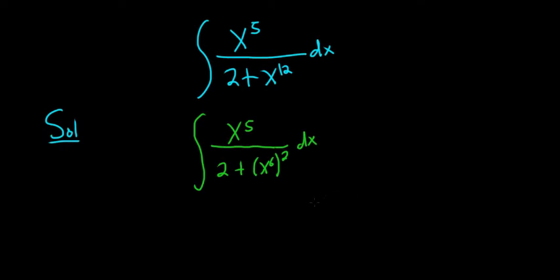And now we can make a u-substitution and things should work out. Let's try it. So if we let u be x to the 6th, then when we take the derivative du, we bring the 6 down, so we get 6x to the fifth dx.